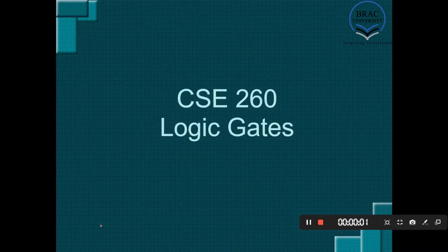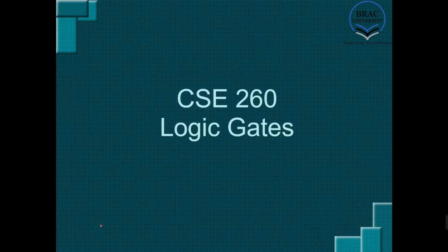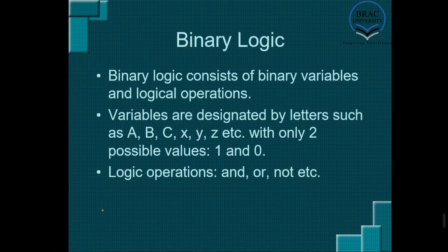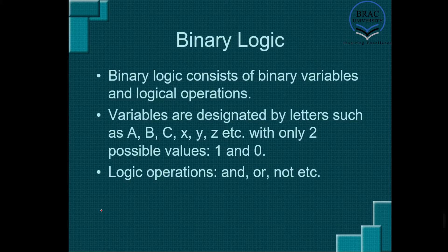Dear students, assalamu alaikum. In this lecture we're going to learn about logic gates. First, let's learn a bit about binary logic. Binary logic consists of binary variables and logical operations. Variables are usually designated by alphabets such as A, B, C, D, X, Y, Z, etc., but they can only have two possible values: 0 or 1. Since we're talking about binary logic, there will definitely be some logical operations. These operations include AND, OR, NOT, etc.